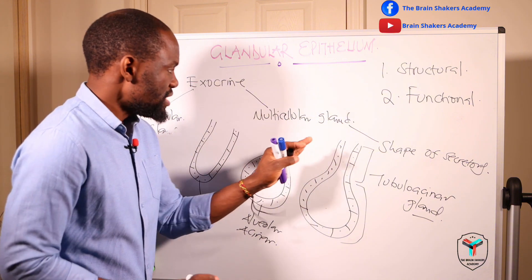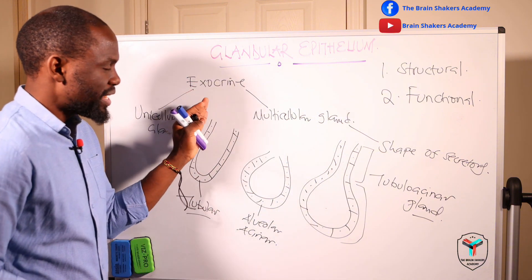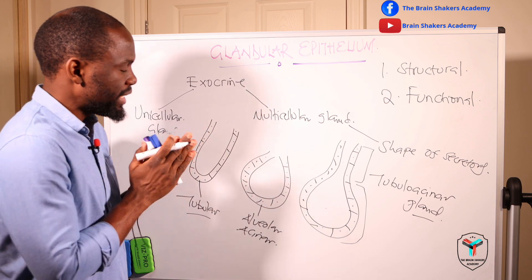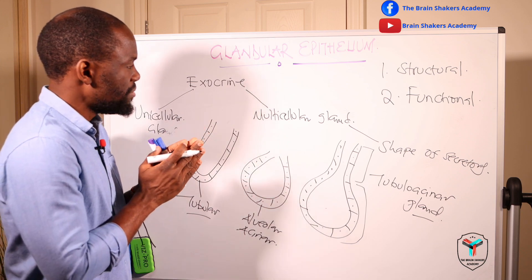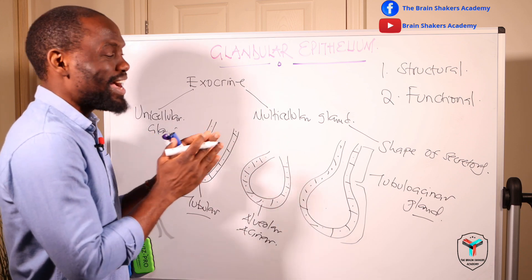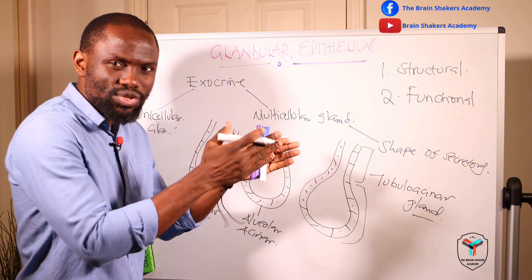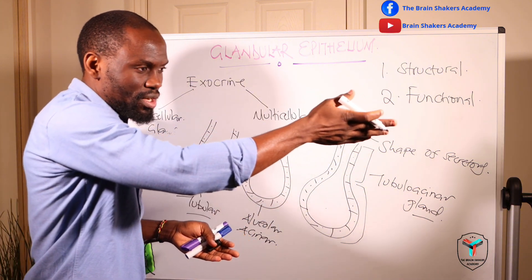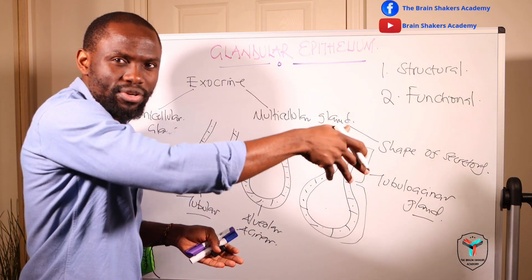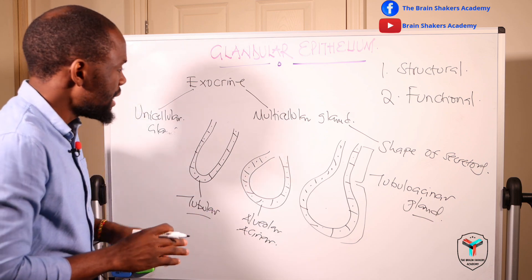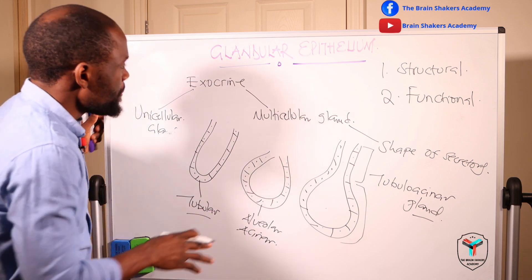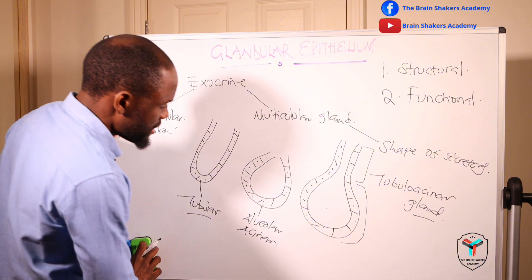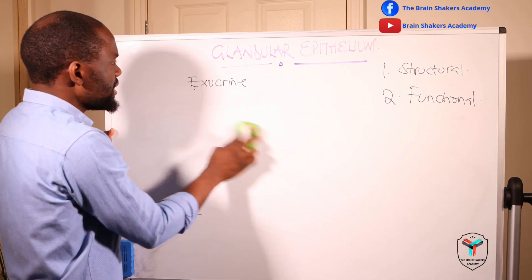For exocrine glands, they do not just produce and package their products — they must deposit them into a duct and allow the secretion to travel to a lining or covering epithelia. That is why glandular epithelia is part of the epithelial tissues as well.